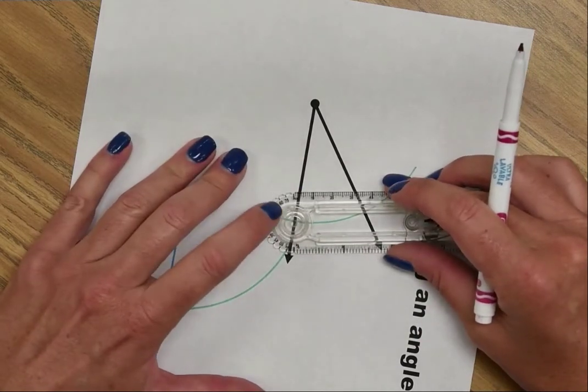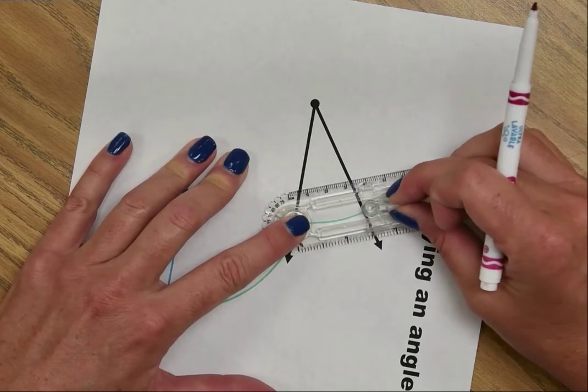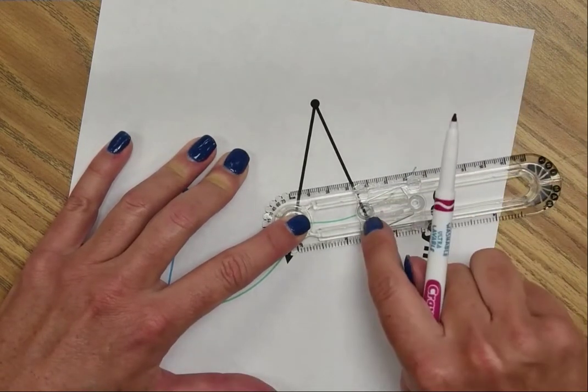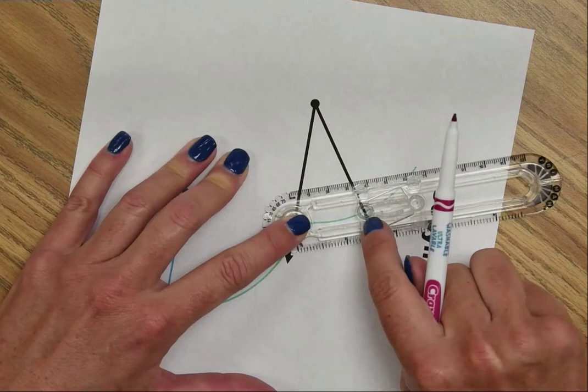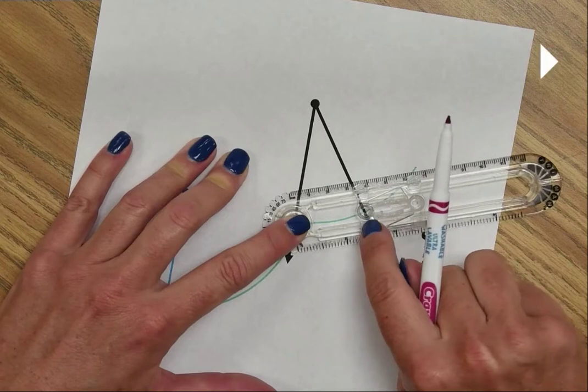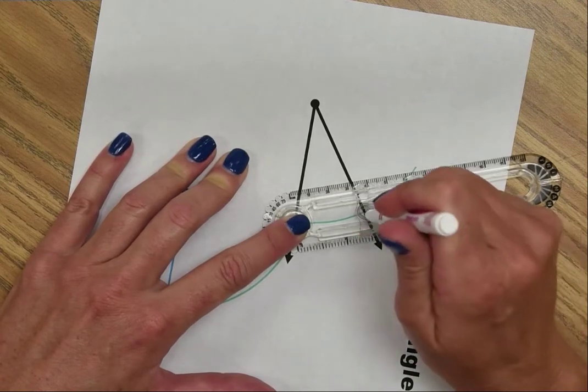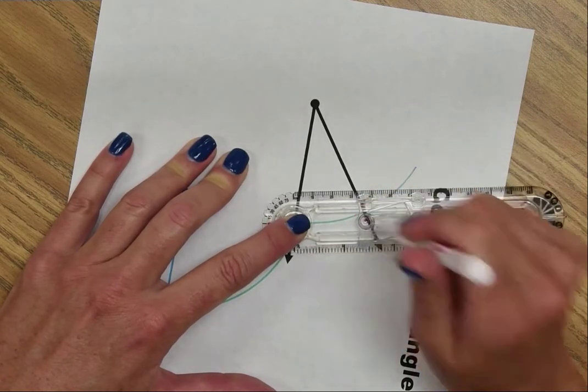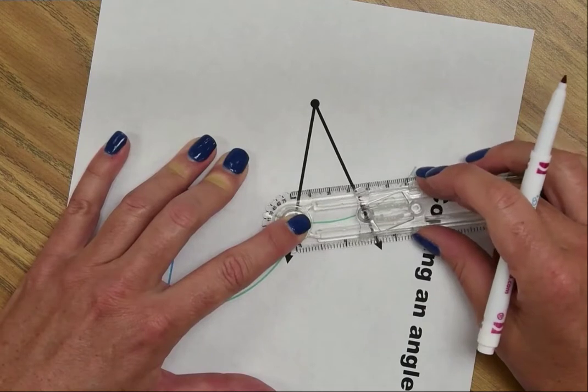I'm then going to slide the hole so that the other intersection is visible through the hole. So my bullseye is on the left intersection, my hole is on the right. You don't need to make a mark here. I'm doing it just to show you where the hole is.